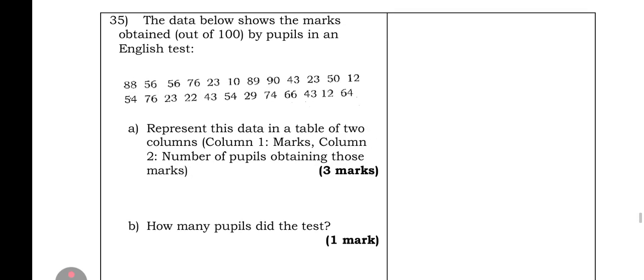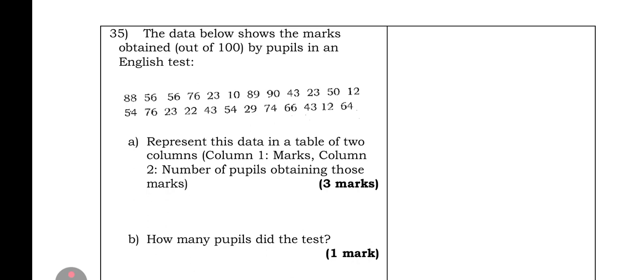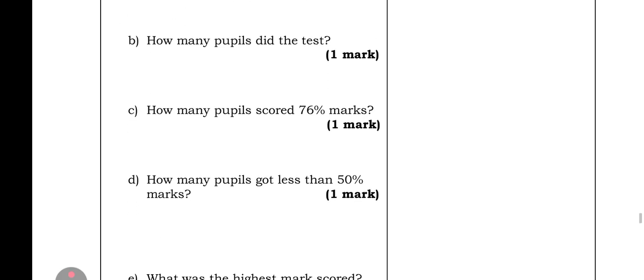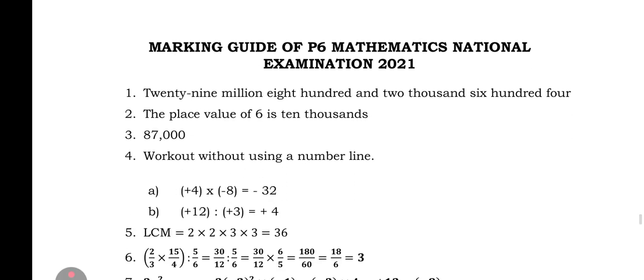This is statistics. Group the data provided out of 100. These are the marks of pupils in an English test, and I'll ask you to place this data in a table of two columns: marks column and pupils. How do you fail mathematics, please students? Very easy.